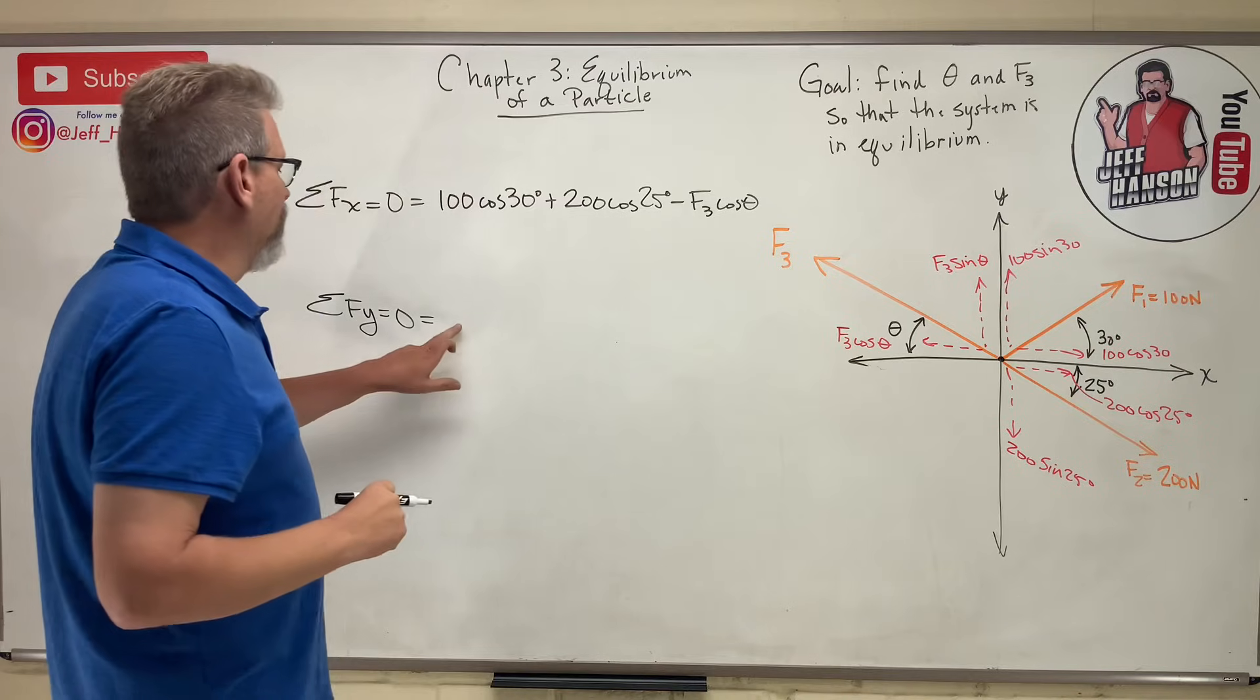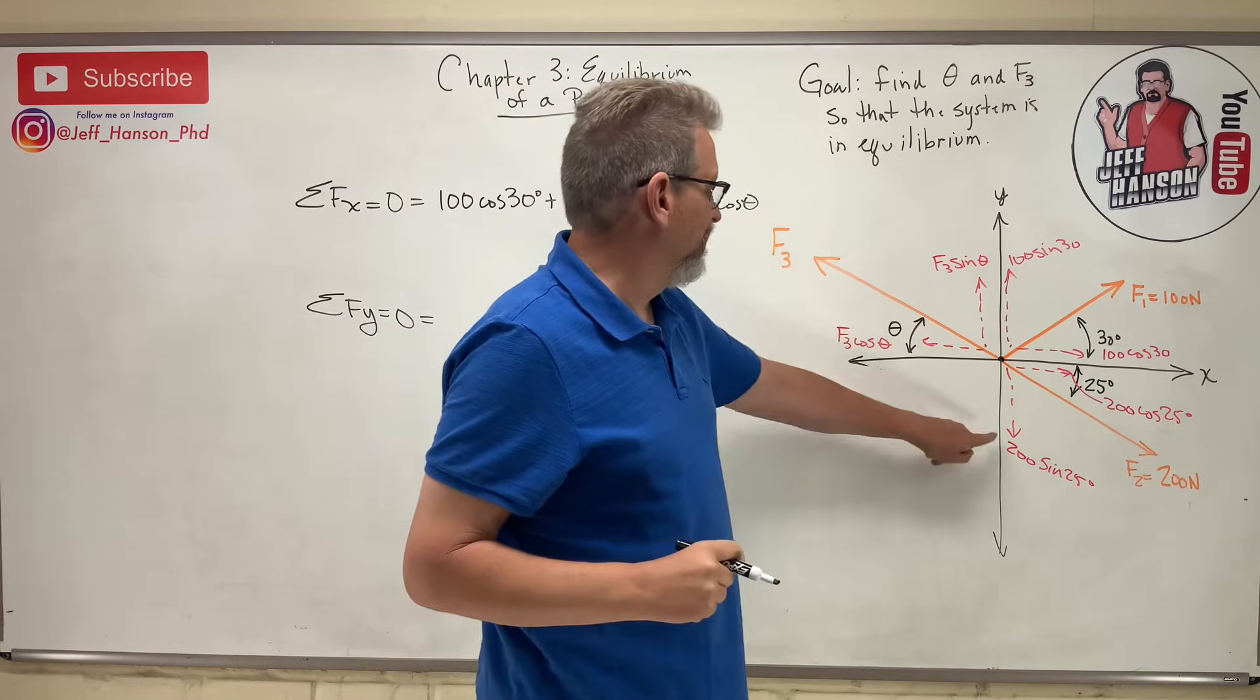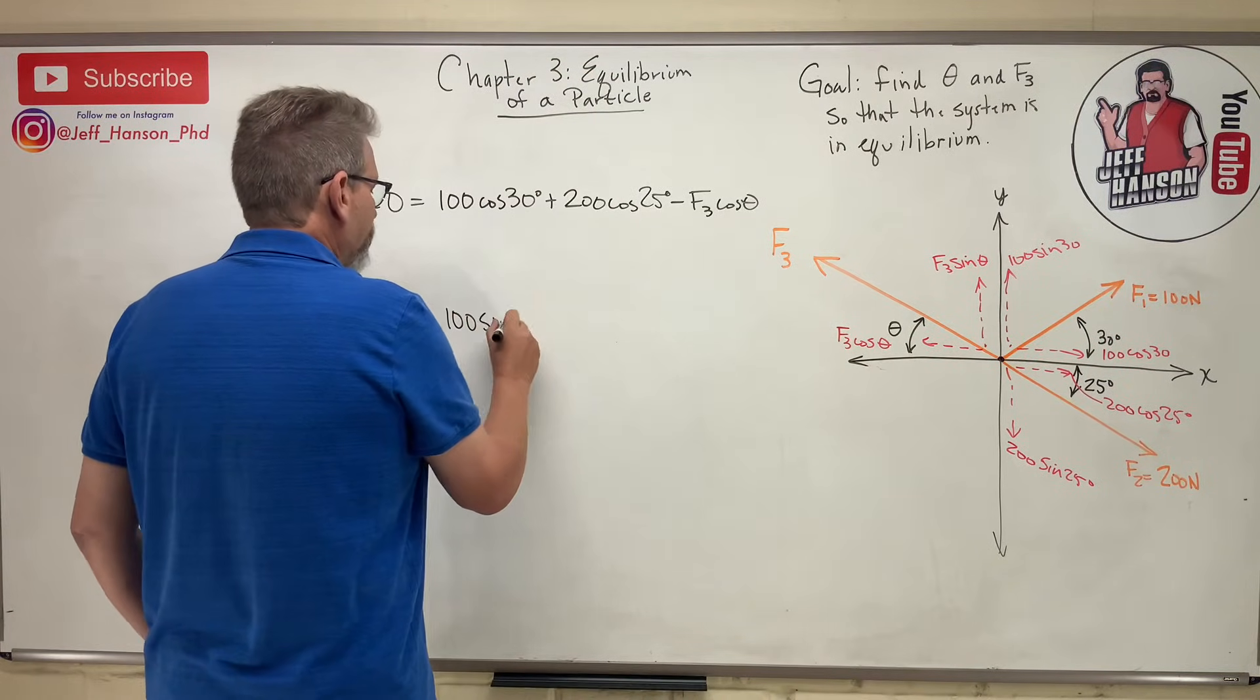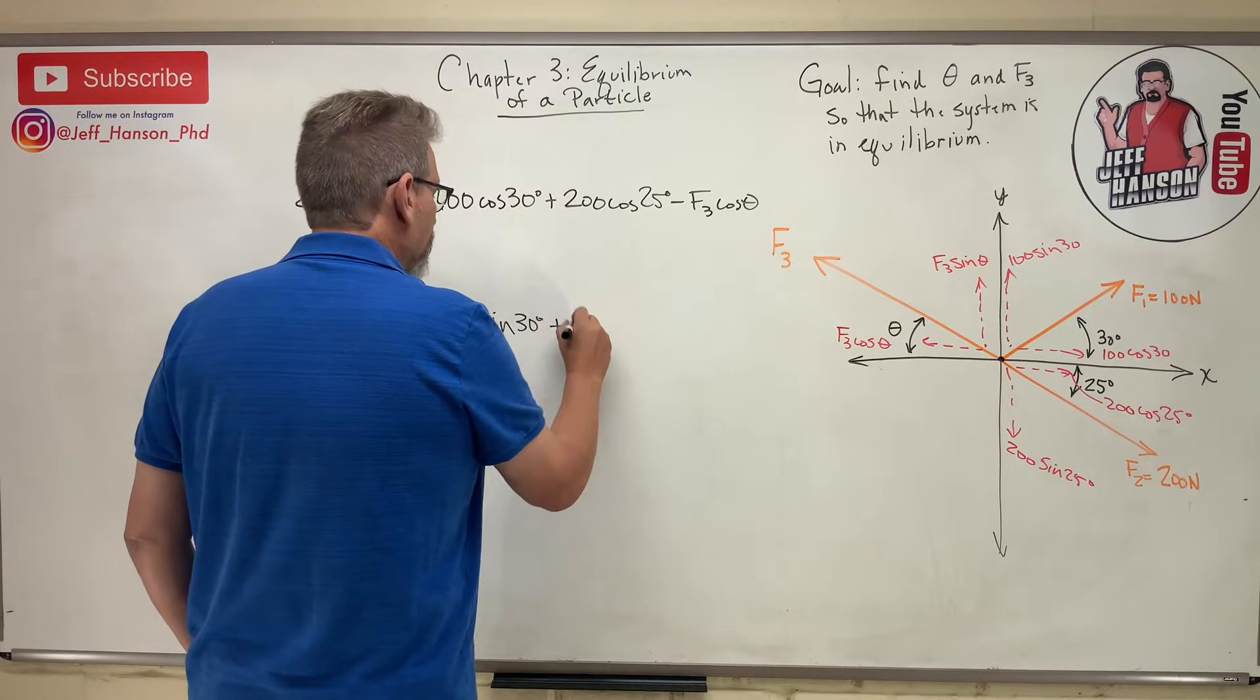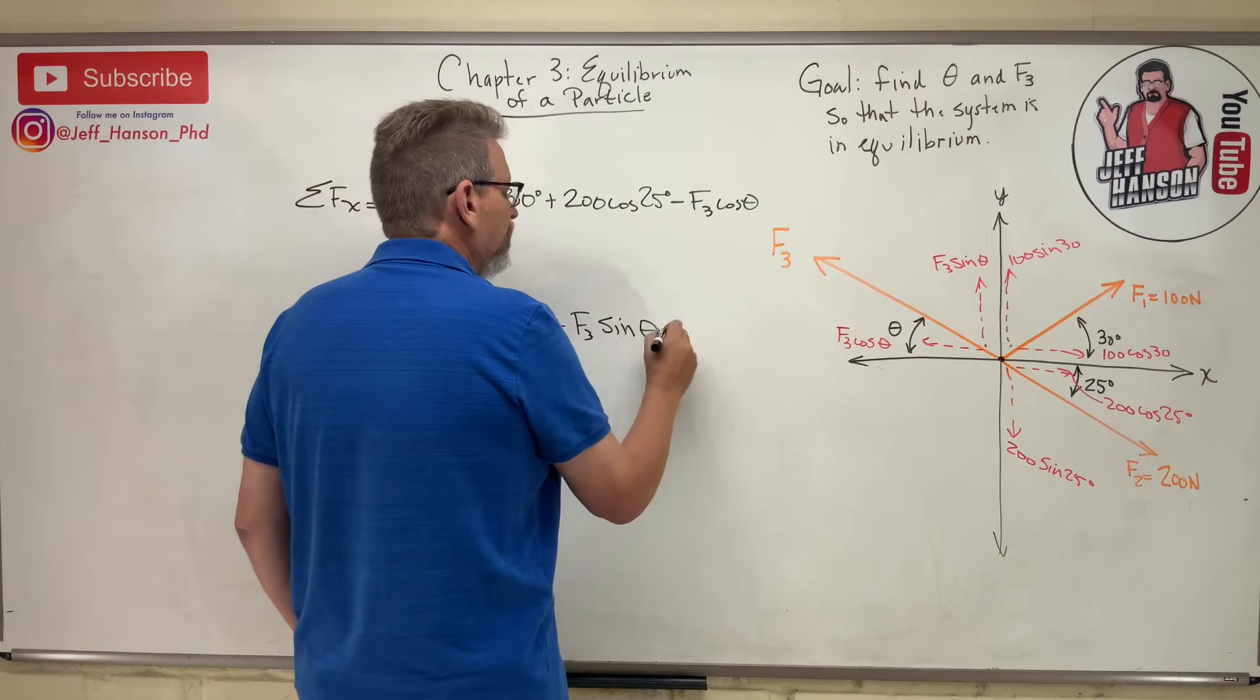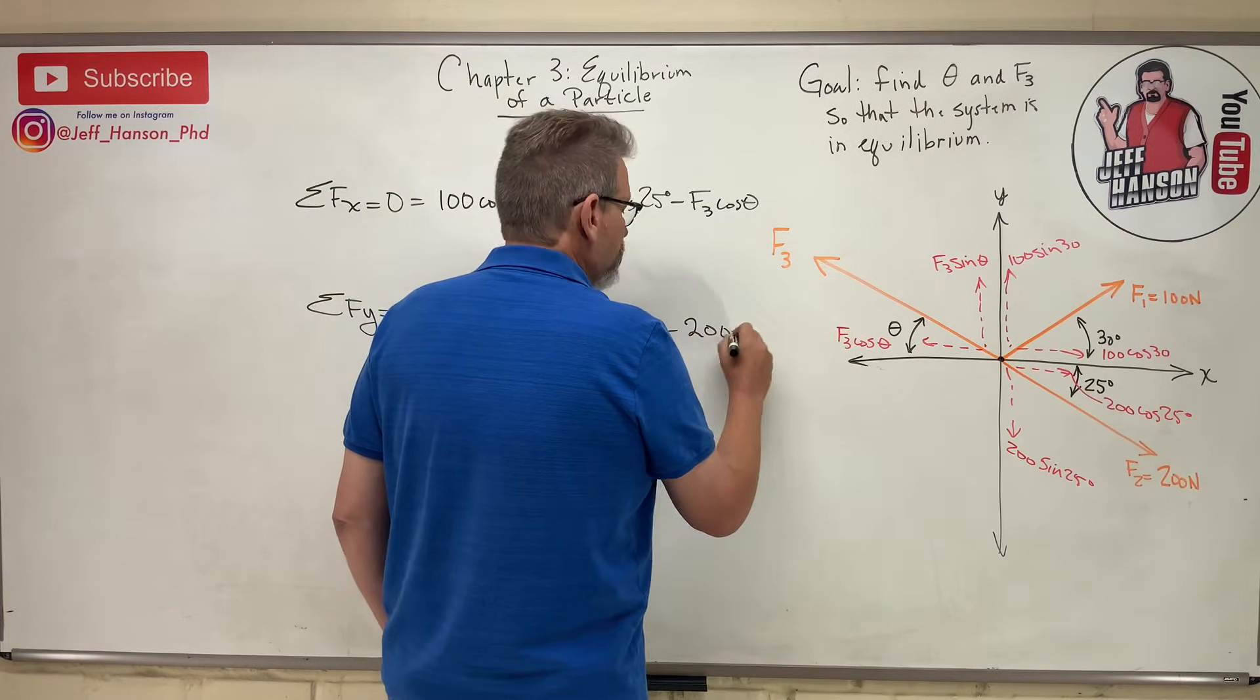And then the y equation, what goes in the y equation? Well, it would be these two guys, and then that guy down there. So 100 sin 30 plus F3 sin of theta, and then minus 200 sin of 25.